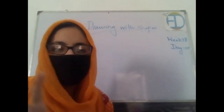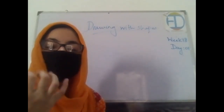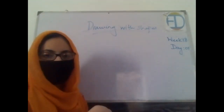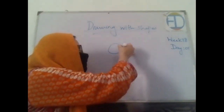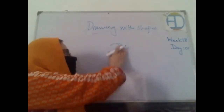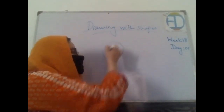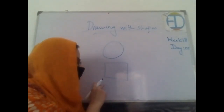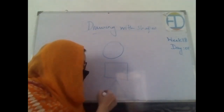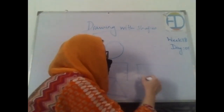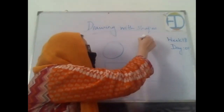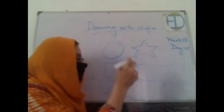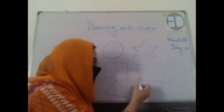So before moving toward that, tell me how many shapes do you know about? If we talk about the mathematical shapes we already know, the common shapes are: this is a circle or sphere. This is a square, which has all four sides equal. Then we have a triangle. Then we have a rectangle. Then we have a star.